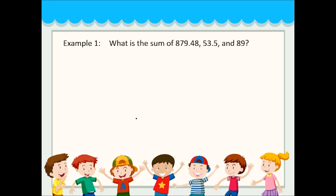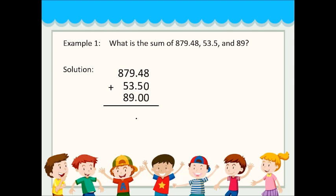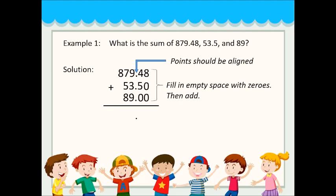Example: What is the sum of 879.48 plus 53.5 and 89? We have to align the numbers — don't forget to align the decimal points — and fill in with zeros. So, 879.48 plus 53.50 plus 89.00 equals 1,021.98.